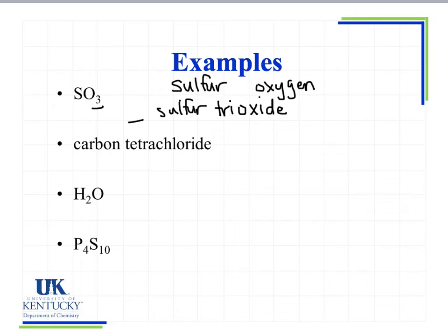We have carbon tetrachloride. We have carbon — there's no prefix in front of carbon, so that tells us we only have one of them. I go to the end and I see chloride, so I know chlorine is the element, and it has the prefix 'tetra,' meaning we have four of them. So CCl4 is carbon tetrachloride.